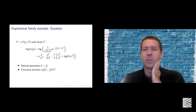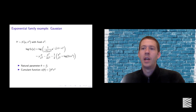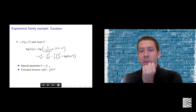The Gaussian or normal distribution is also in the exponential family. When I mention sigma squared, I'm assuming it's fixed, just to keep it simple. I'm not going to cover dispersion, but there is a generalization of all this theory that includes dispersion parameters. If sigma squared is fixed, the natural parameter is mu over sigma squared, and this is the corresponding cumulant function.